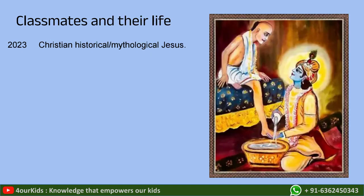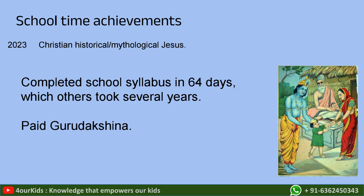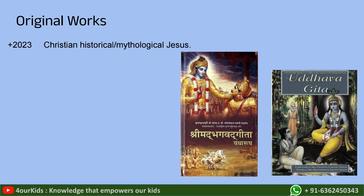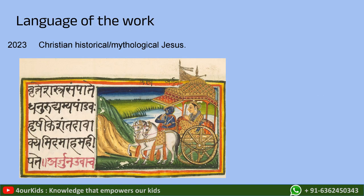The syllabus that Krishna studied — 64 arts and 14 vidyas — is still known. The classmates of Krishna are known. Krishna completed the full school syllabus in 64 days, whereas others took several years. The gurudakshina he paid is also known. The original works of Krishna, the Uddhava Gita and the Srimad Bhagavad Gita, are still available today. The language in which Krishna communicated is still present, compared to English, where even Shakespeare's documents are difficult to understand because English grammar was created much after Shakespeare.